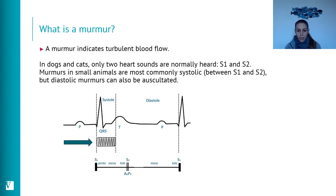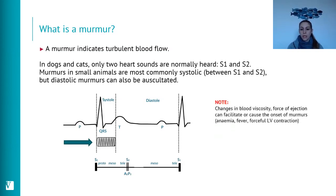Murmurs can also occur during diastole, and they can have characteristics that are not simply systolic or diastolic. We need to remember that turbulent blood flow doesn't always mean pathological heart disease. There are other conditions that can alter blood viscosity or change LV ejection.